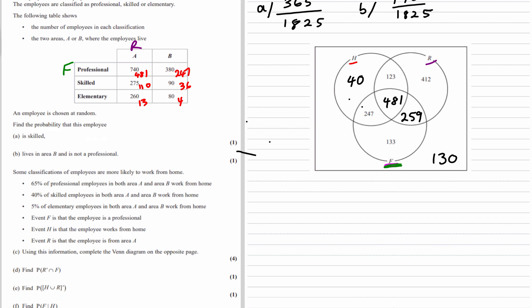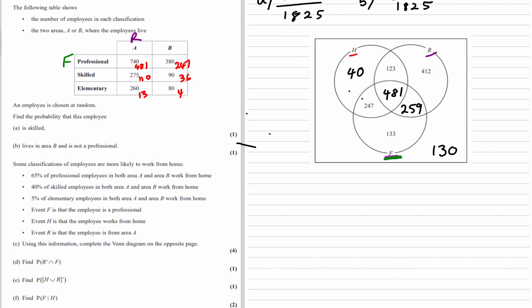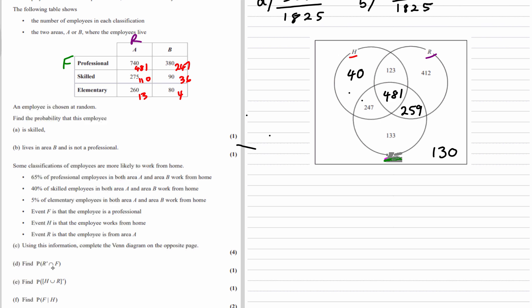Part D. We need to find the probability of the intersection of not R and F. So not R is anything not in R, and F. So we've got the 247 and the 133. So we've got 247 and 133 out of the total, which was 1,825.